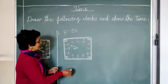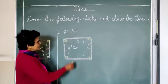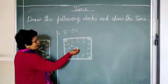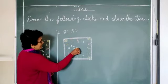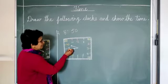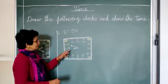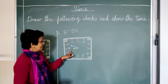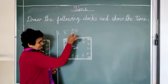Now, we have to show 8:50. So the longer hand, the minute hand, is on 10. And the shorter hand is almost reaching towards 9. So this is our 8:50.